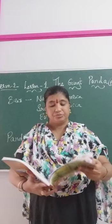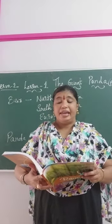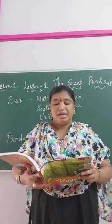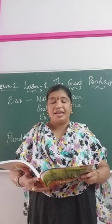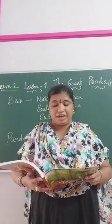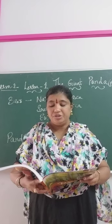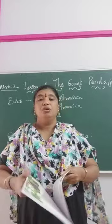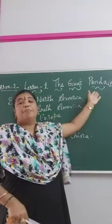Let us go to the lesson now. There are 8 different types of bears on the planet. Bears live in North America, South America, Europe and Asia. Giant pandas are found only in China. There are probably only about a thousand giant pandas left in the world. Today we are going to learn the lesson: the giant panda.